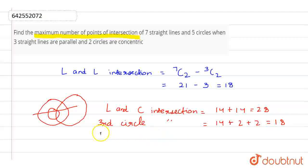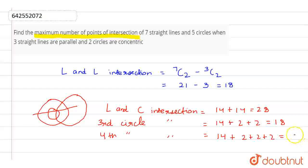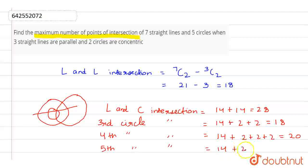Similarly, the 4th circle intersection equals 14 for the straight lines plus 2 plus 2 plus 2 for the other circles, which equals 20. Now the last circle, the 5th, gives us 14 plus 2 plus 2 plus 2 plus 2, which is 22.